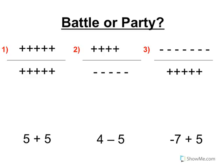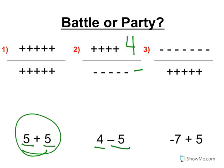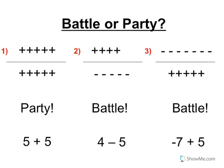Number one: is it a battle or a party? Five plus five — five positives, five positives. Battle or party? Number two: four positives, five negatives. Battle or party? Number three: seven negatives, five positives. Battle or party? The answers are: party, a battle, and a battle. I hope you got that right.